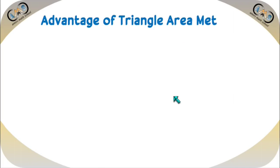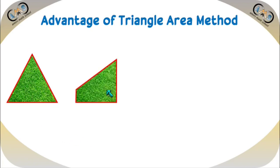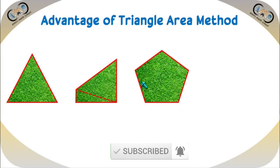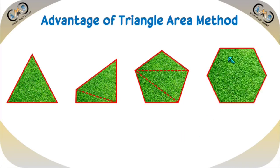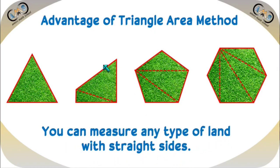The main advantage of the triangle area method is that it can measure any type of land with straight sides. For triangular or any four-sided land, divide into two triangles. For a five-sided land, split into three triangles and sum the areas. For a six-sided land, join diagonals to get four triangles and sum all values. Using the triangle area method, you can easily get the exact result for any polygon-shaped land.